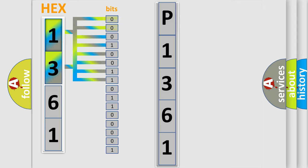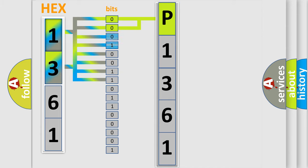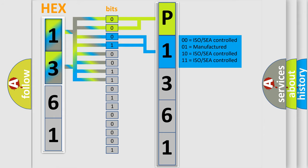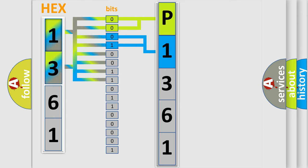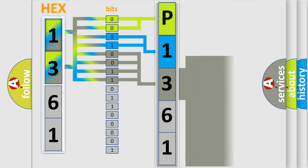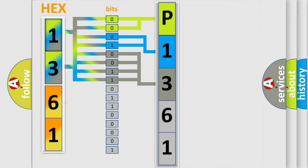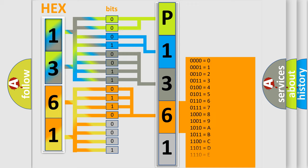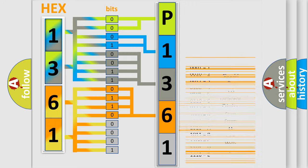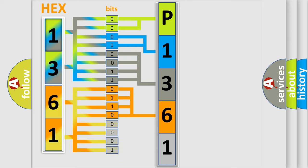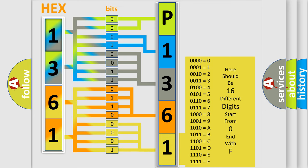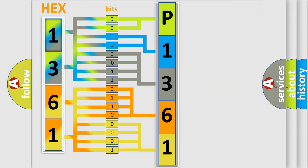Zero means low level; one means high level. By combining the first two bits, the basic character of the error code is expressed. The next two bits determine the second character. The last four bits of the first byte define the third character of the code. The second byte is composed of eight bits: the first four bits determine the fourth character of the code, and the last four bits define the fifth character. A single byte conceals 256 possible combinations. We now know how the diagnostic tool translates the received information into a more comprehensible format.